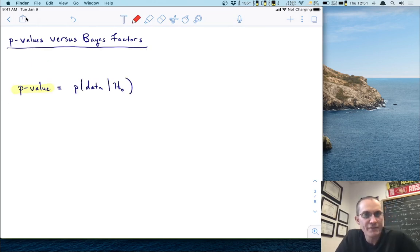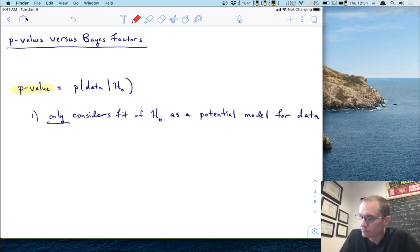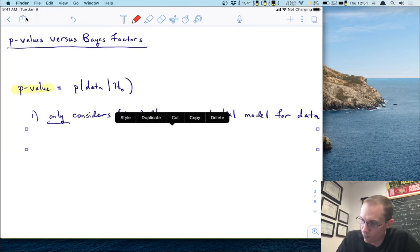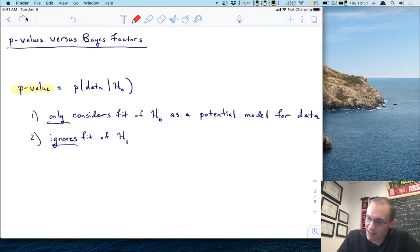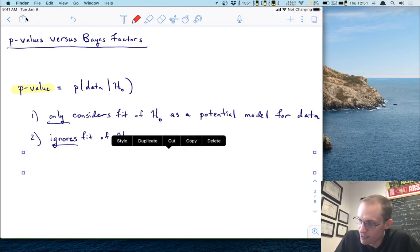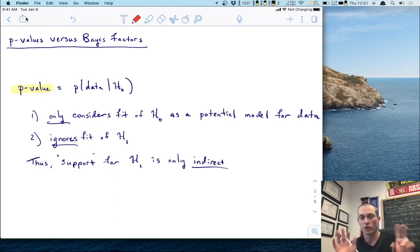First of all, just to recall the definition, the p value is the probability of the data or more extreme under the null. As we just mentioned, this only considers the fit of the null as a potential model for the data. It does not assess the fit of h1. And because it does not assess the fit of h1, that means that the support or quote evidence for h1 is never direct. It's only ever indirect. That seems like a limitation to me, but I digress.